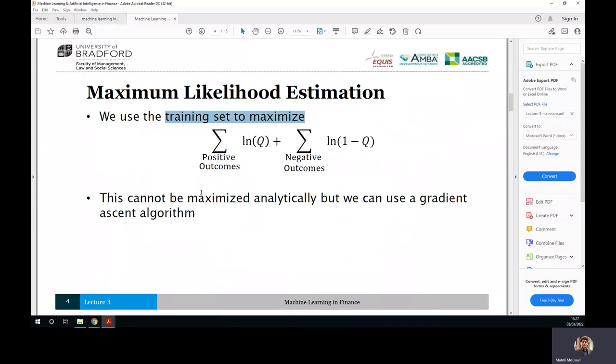Usually in machine learning, when we want to develop a model, we actually divide our sample into three sub-samples, including training set or training sample, validation sample, and test sample. Training sample will be used to develop models. So after developing a model, we can estimate the maximum likelihood.